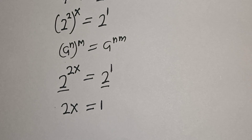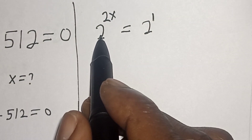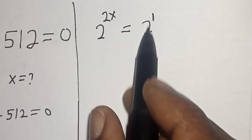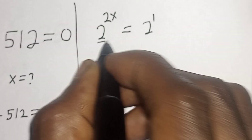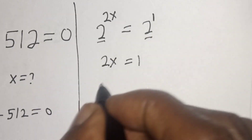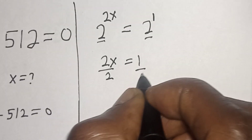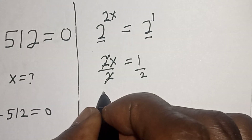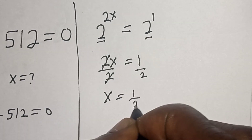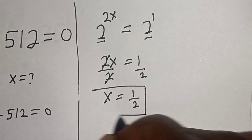We have 2 to the power of 2x equals 2 raised to the power of 1. Since they have the same base, 2x equals 1. Dividing both sides by 2, x is equal to 1 over 2. That is our final answer.